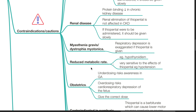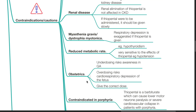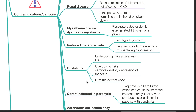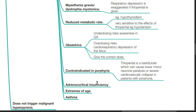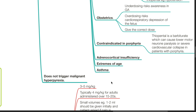In patients with reduced metabolic rate such as hypothyroidism, these patients are very sensitive to the effects of thiopenthal such as hypotension. In obstetrics, underdosing of thiopenthal risks awareness in GA and overdosing risks cardiorespiratory depression of the fetus — give the correct calculated dose. Thiopenthal is contraindicated in patients with porphyria as it is a barbiturate which can cause lower motor neuron paralysis or severe cardiovascular collapse. It should be avoided in patients with adrenocortical insufficiency, extremes of age due to risk of hypotension, and patients with asthma due to risk of bronchospasm. Thiopenthal is not a trigger for malignant hyperpyrexia.